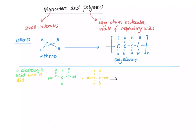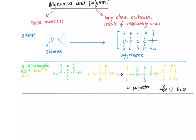There are also condensation polymers. If you react a dicarboxylic acid — it's a dicarboxylic acid because it's got 2 carboxylic acid groups — and a diol, so it's a diol because it's got 2 alcohol groups, the product you get is a polyester and you also get water made.